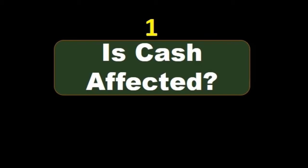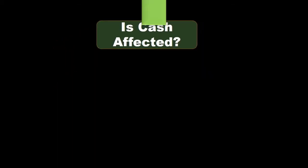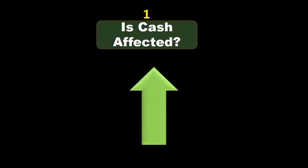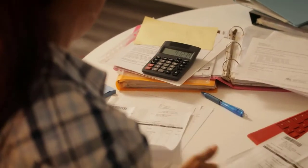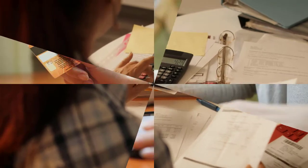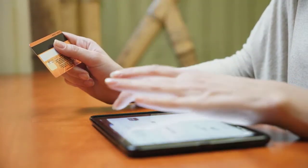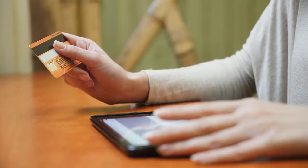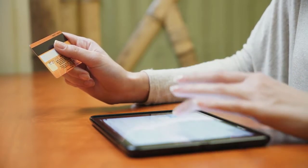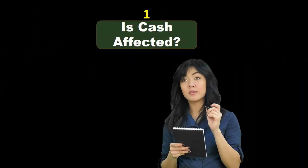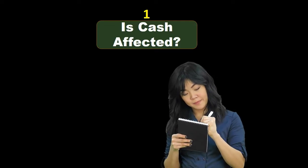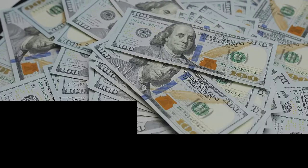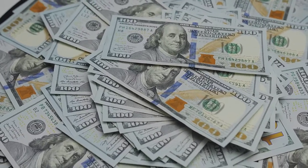The first thing we start with is: is cash affected? Any time we're going to record a transaction — paying a bill, invoicing someone, entering a bill, doing payroll — we're going to have a debit and a credit. Which account should we start with? I would suggest we always want to start with cash first. Cash will be affected in like 75% of transactions.